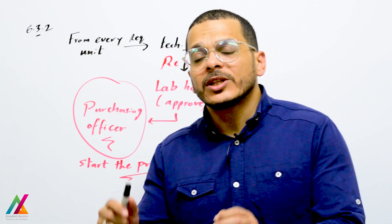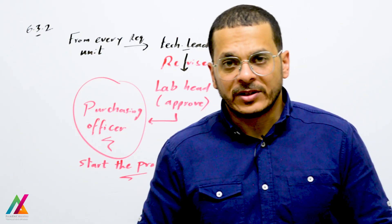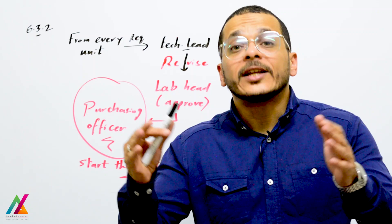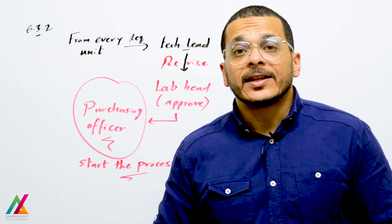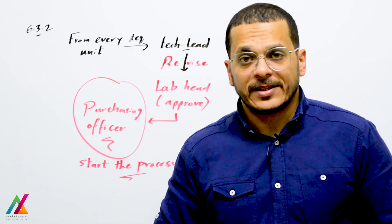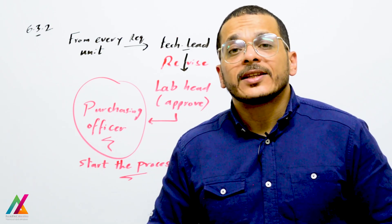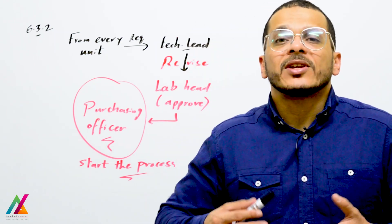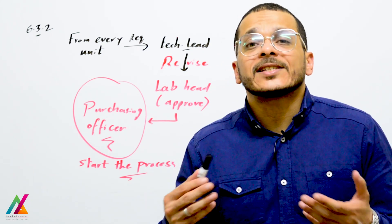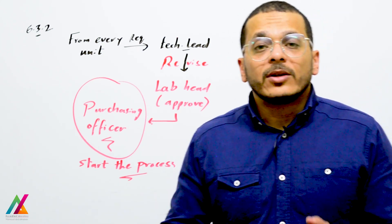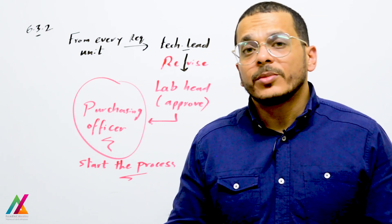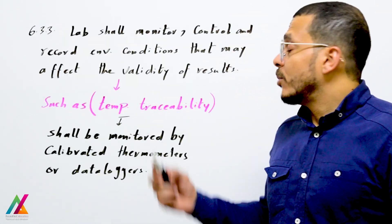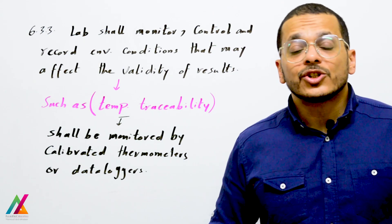Each unit sends its list to the technical lead, who revises and consolidates all lists into one. The technical lead then sends this combined list to the lab head, who approves it based on the lab budget. The approved list is then sent to the purchasing officer, who starts the purchasing and evaluation of tenders based on a technical enterprise evaluation of all provided companies.